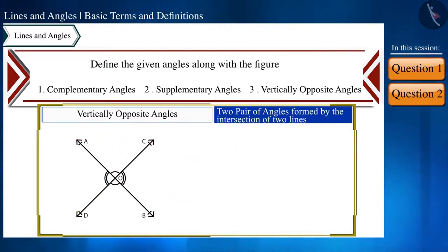Like here, line AB and line CD are intersecting each other at the point O. As a result we get two pairs of vertically opposite angles. The first pair is angle AOC and angle BOD, and the second pair is angle AOD and angle COB.